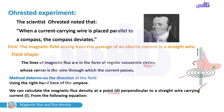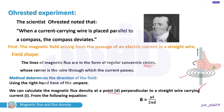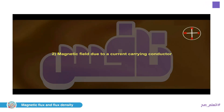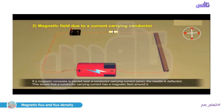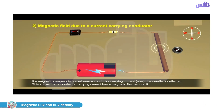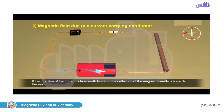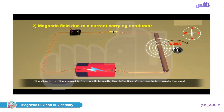We can calculate the magnetic flux density at point d perpendicular to a straight current-carrying wire from the equation: B = μI / (2πd), where B is magnetic flux density, μ is permeability, I is electric current, and d is the perpendicular distance between the wire and the point.